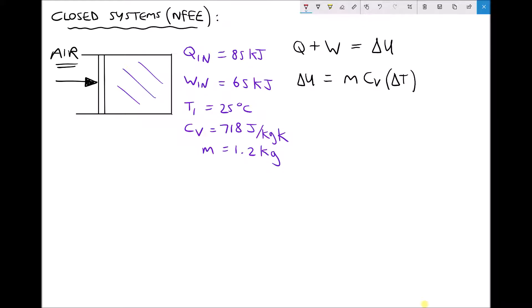This time we have heat in of 85 kilojoules, but we're also doing work in of 65 kilojoules. It's work in because we're compressing the air. Therefore both our Q value and our W value are going to be positive. Q plus W equals delta U, therefore delta U this time equals 150 kilojoules.